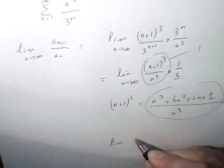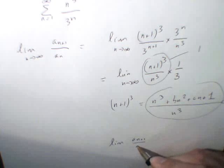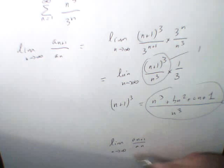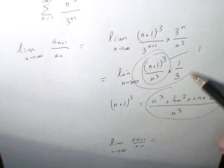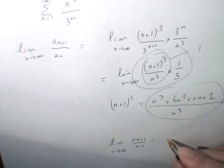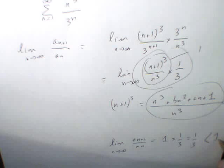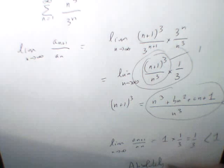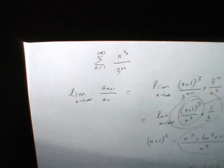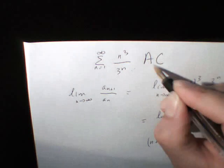So the limit of aₙ₊₁ divided by aₙ for n tending towards infinity is 1 multiplied by 1/3, which is 1/3. And 1/3 is strictly less than 1, so we have an absolutely convergent series.